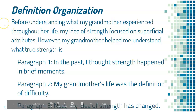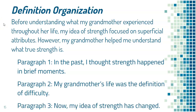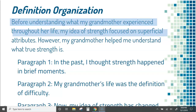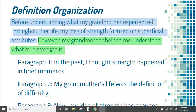Now the last one is what's called the definition organization. It's kind of self-explanatory — you're starting with a definition. So if you take a look at the thesis here: before understanding what my grandmother experienced throughout her life, my idea of strength focused on superficial attributes. That's my initial definition of what strength is. Then I say, however, my grandmother helped me understand what true strength is. So I have what my definition was before and what it is after — the definition of strength. You want to make sure, if you're going to do the definition pattern, that you identify what it is that you are defining. Here, it's pretty clear that it's strength.